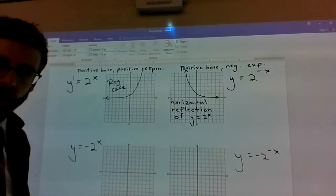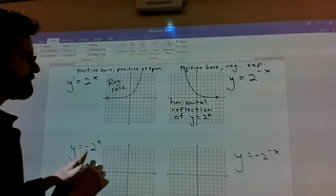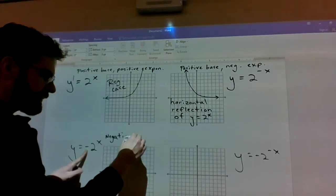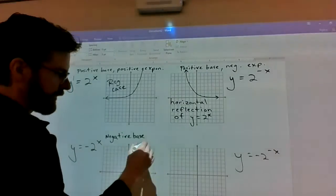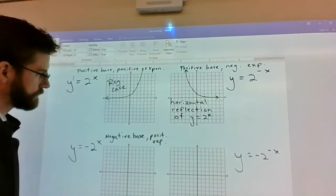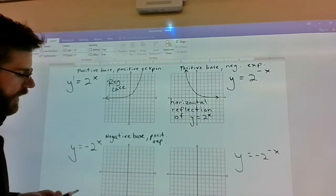Let's check out what happens when you put a negative base, so a negative base, but still keep a positive exponent.